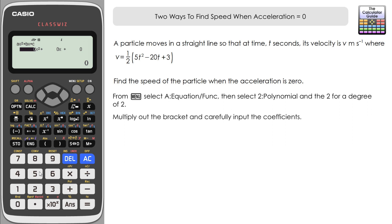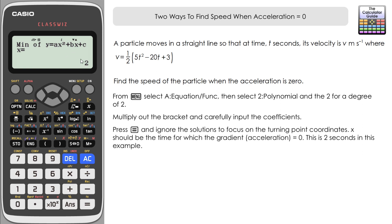Now the slight disadvantage with this method is that you do need to multiply out your bracket here. So we want a half times all of the coefficients that are involved. So it's 5 times a half, five over two, minus 20 over two, that's minus 10, plus three over two, and press equals when we're done. Now we're not going to make use of the solutions here, so ignore x1 and x2.